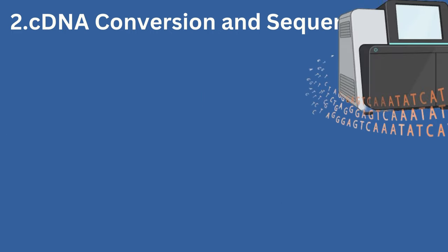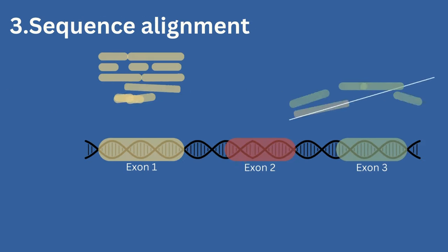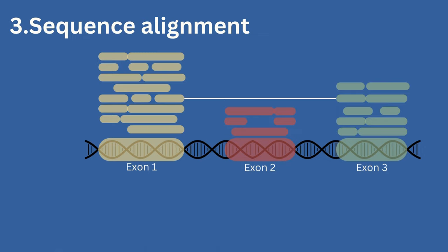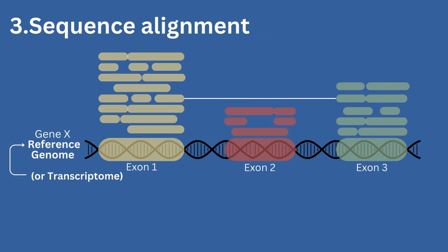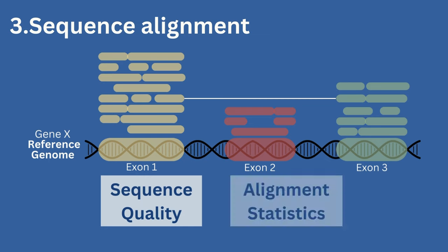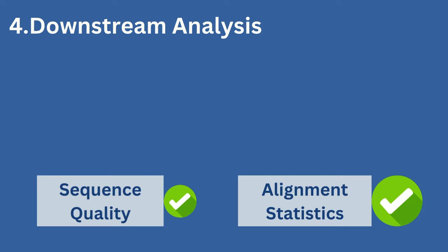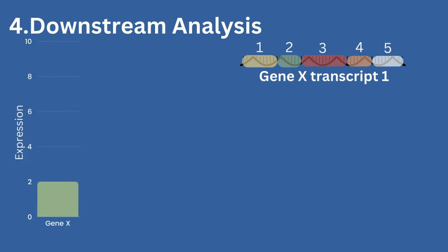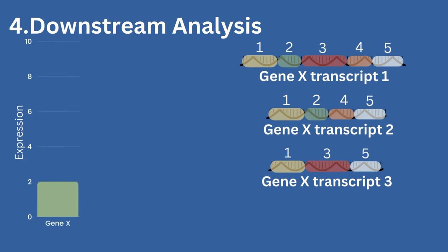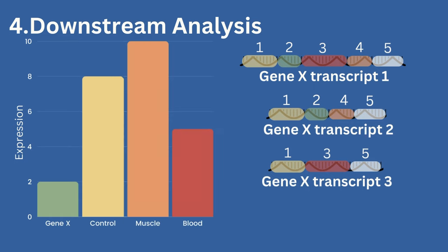The cDNA is then amplified and sent for short-read sequencing. Once the sequencing data is generated, the sequences are aligned to a reference genome or transcriptome to allow for the assessment of changes and variants in the sample. This marks another important quality control step to ensure sequence quality and alignment statistics are within standards. After the quality assessment, the data will be computationally analyzed to allow for the quantification of expressed genes and transcripts. This data can be interpreted and analyzed in comparison to healthy controls and other tissues to gather as much information as possible and come to a diagnosis.